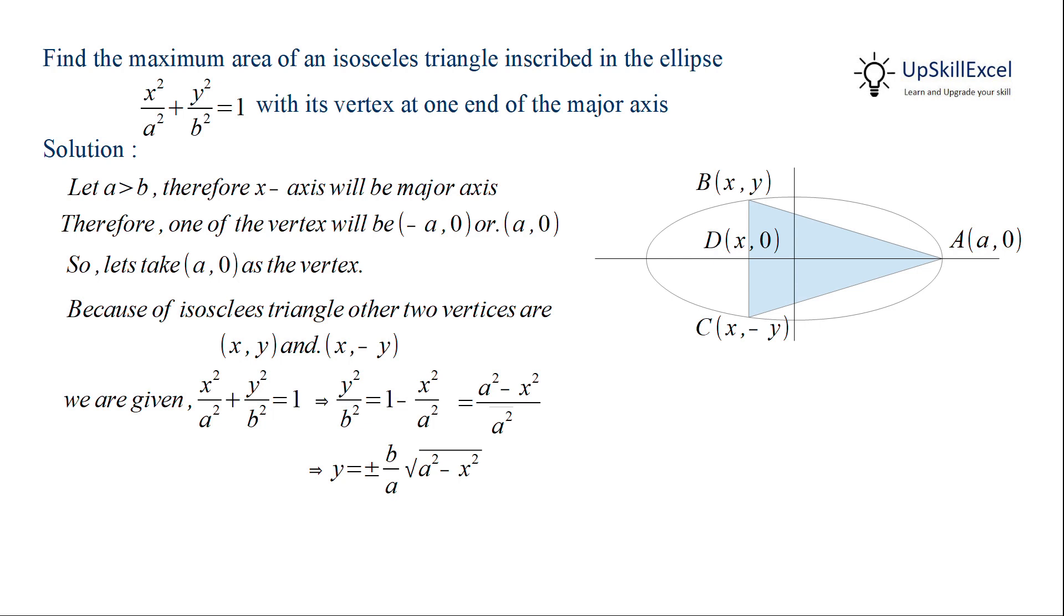Now the base of the triangle is BC. So the length of the base will be equal to the distance between the two points which is equal to 2y and the height is equal to the distance between point A and point D which is equal to a - x.